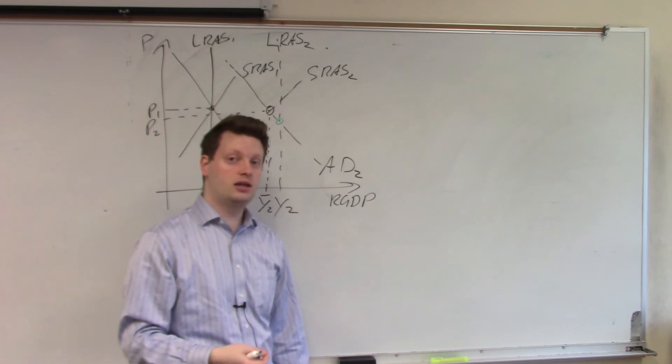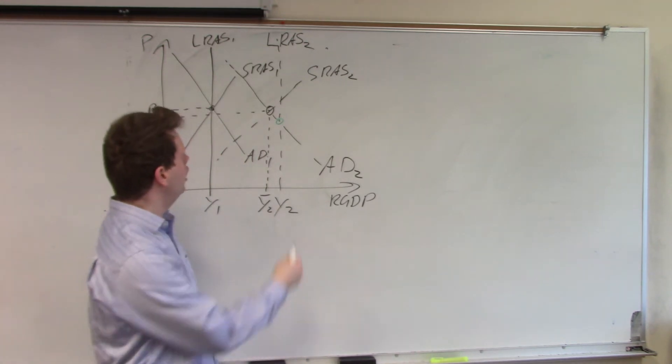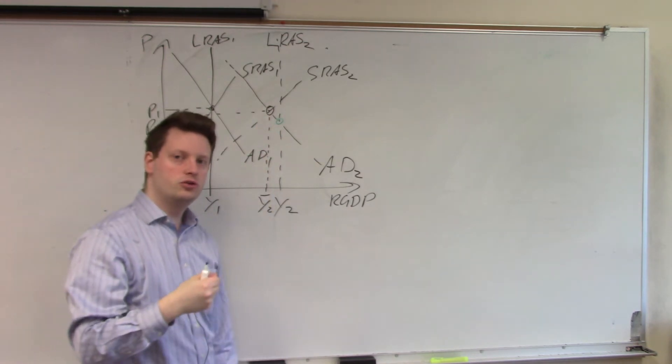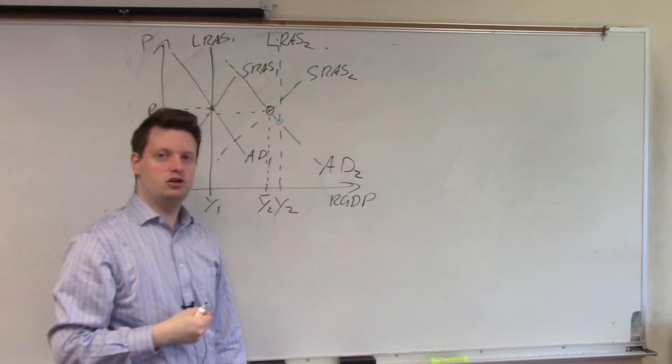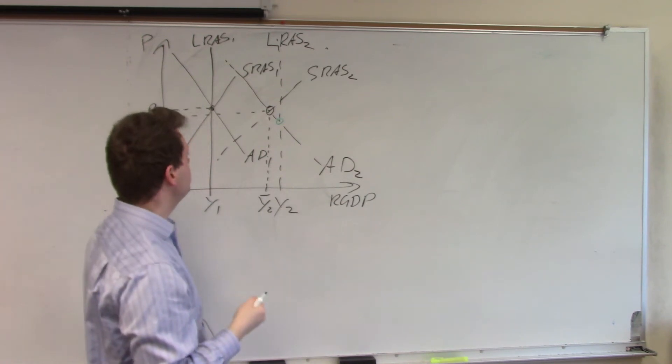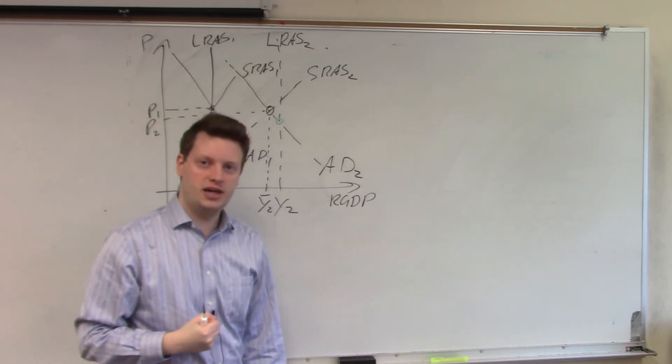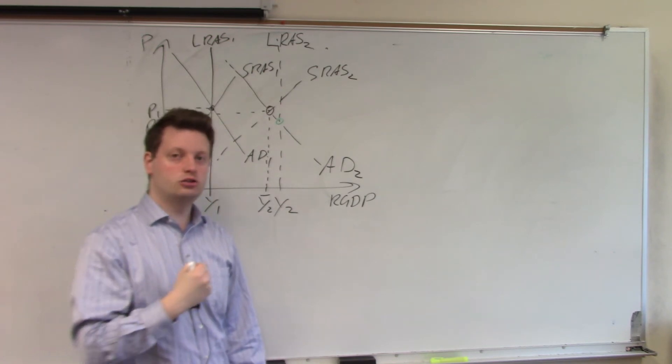If the central bank acts fast enough, it can see, oh, we will be below potential. So, unemployment will be above the natural rate of unemployment. So, what the central bank can do is it can boost the economy through a so-called expansionary policy to shift the economy back to potential.